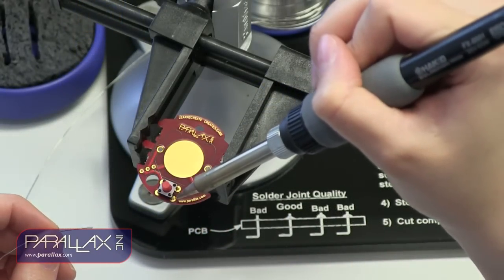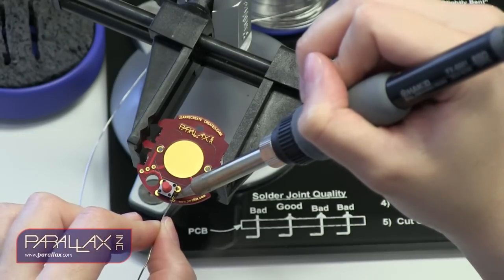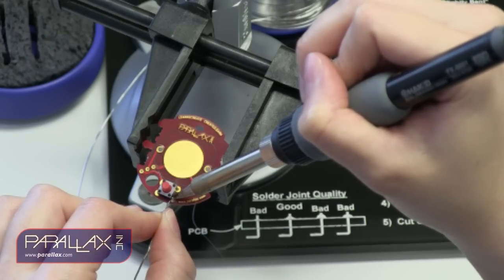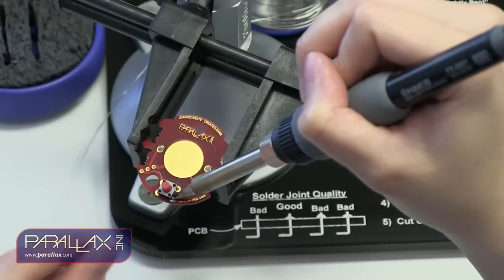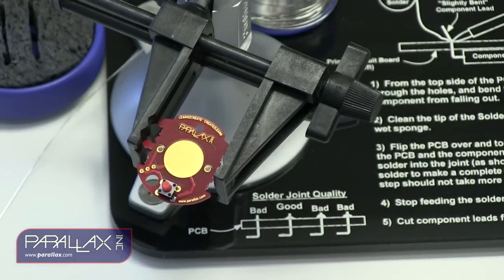Then, press the iron onto one of the pads of the push button and let it sit there for a couple of seconds to heat up. Gently touch some solder to the pad and add enough solder so that the solder completely covers the pad and forms sort of a pyramid shape with the push button lead. Remove the solder but leave the iron on the pad for about another second before you remove it.